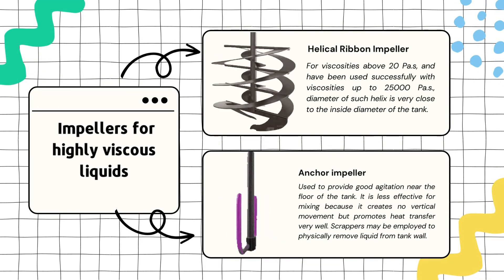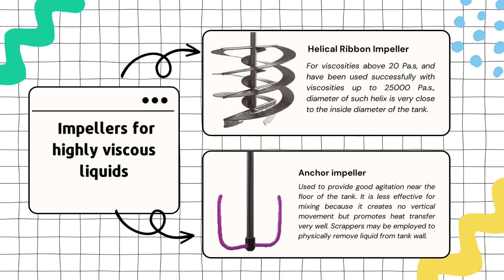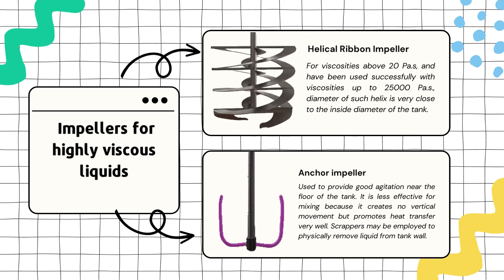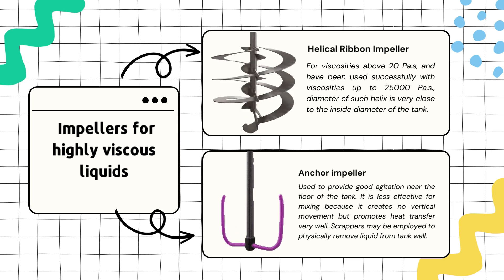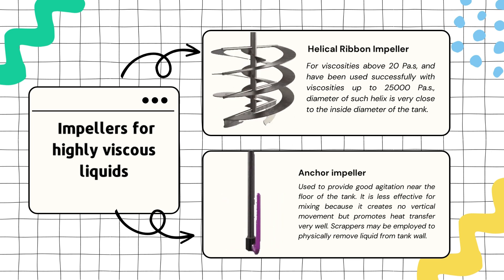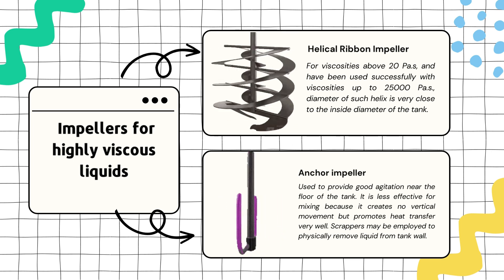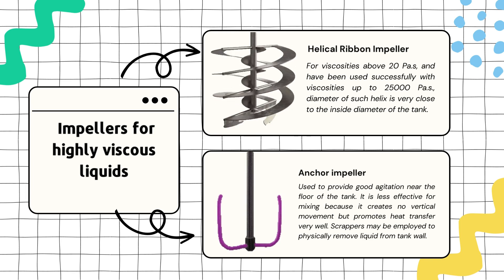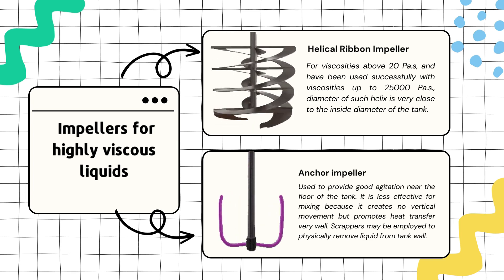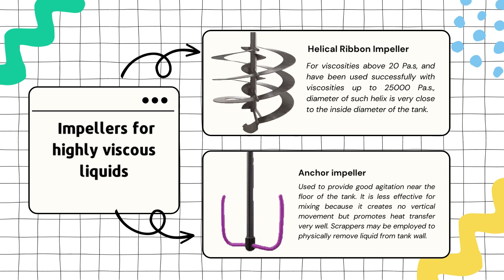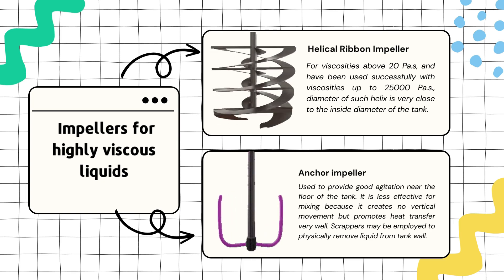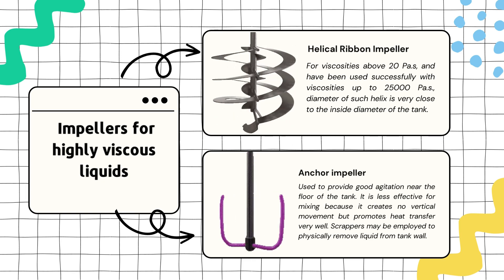When dealing with high viscous liquids, specific impellers are employed. The first is the helical ribbon impeller. This type of impeller is used for viscosities above 20 pascal seconds and has even been used successfully with viscosities as high as 25,000 pascal seconds. The diameter of this helix closely matches the inner diameter of the tank.